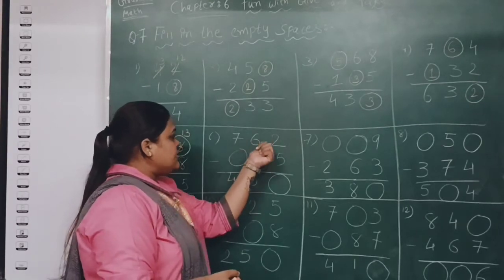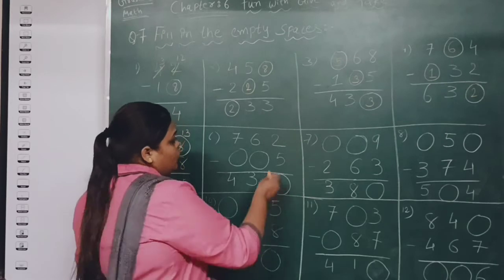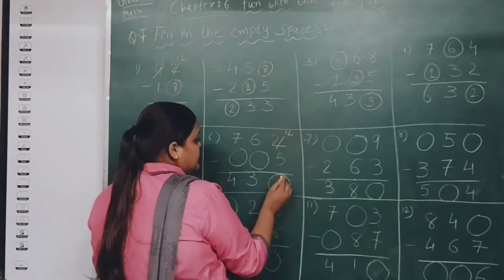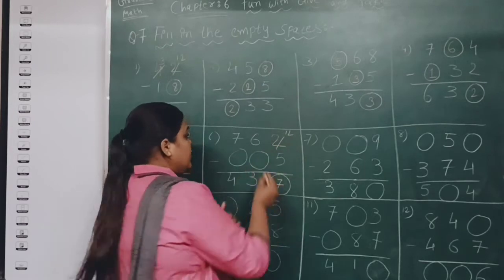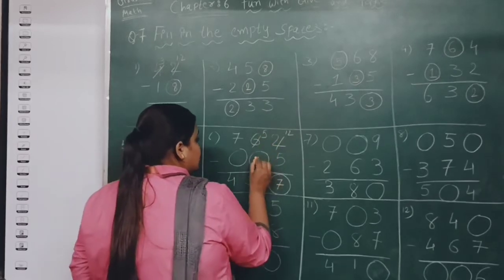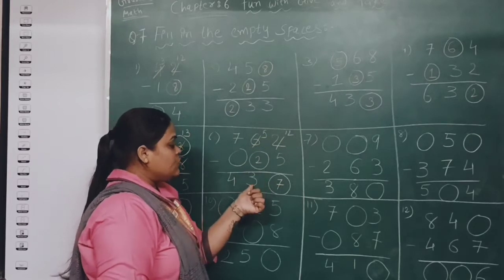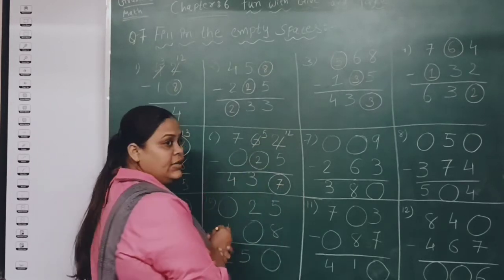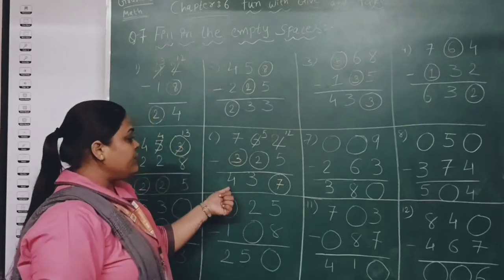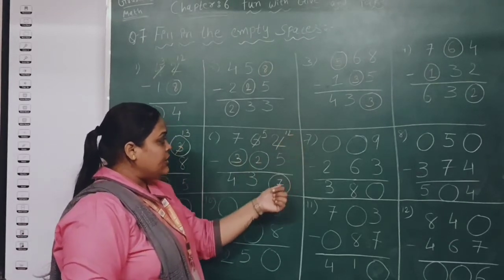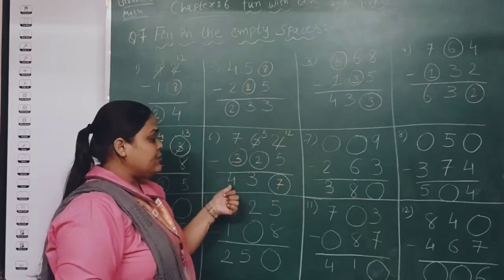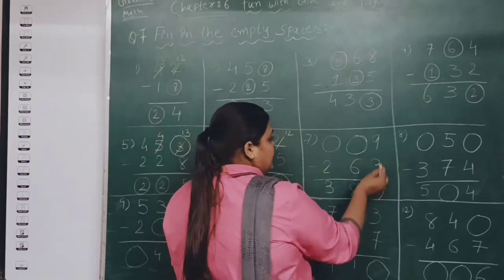Next: 7, 6, 2, 5 are given with empty spaces. 12 minus 5 gives 7. We took 1 borrow, so 5 minus 2 gives 3. And 7 minus 3 gives 4. Checking: 12 minus 5 is 7, yes; 5 minus 2 is 3, yes; 7 minus 3 is 4, correct. Moving on: 9 minus 3 is 6.